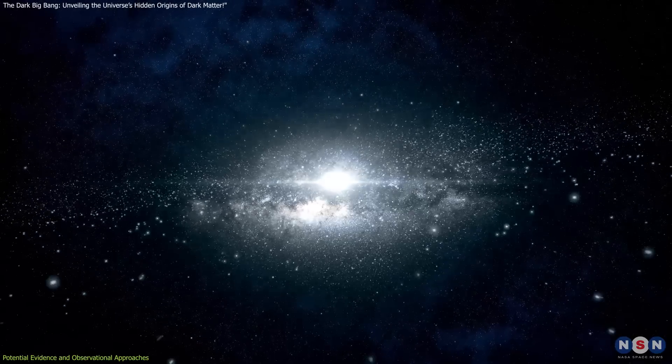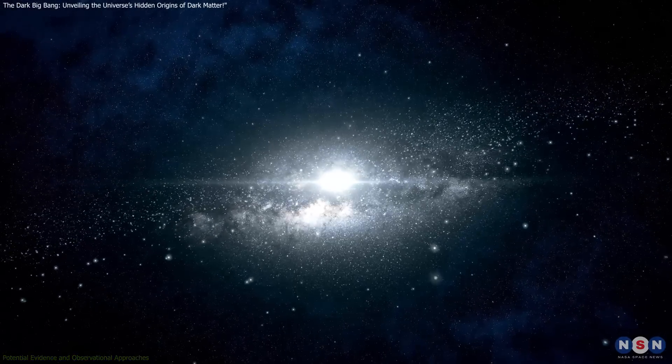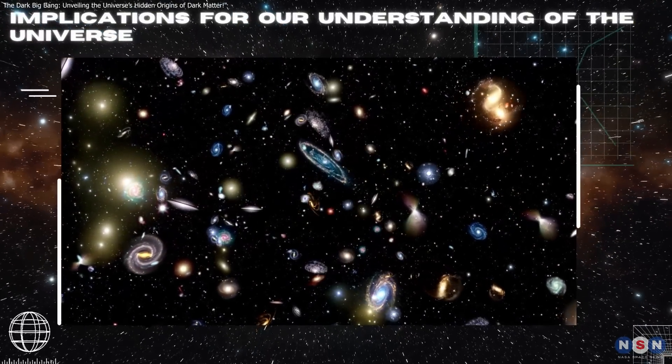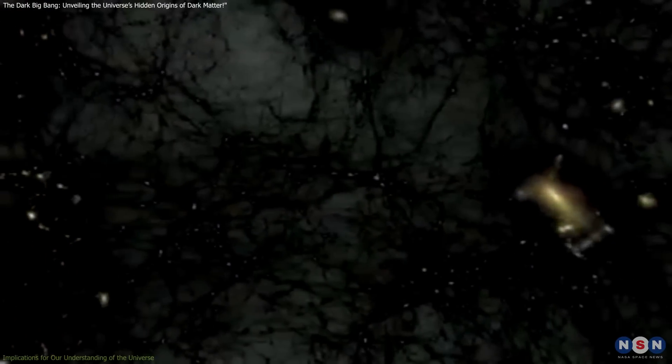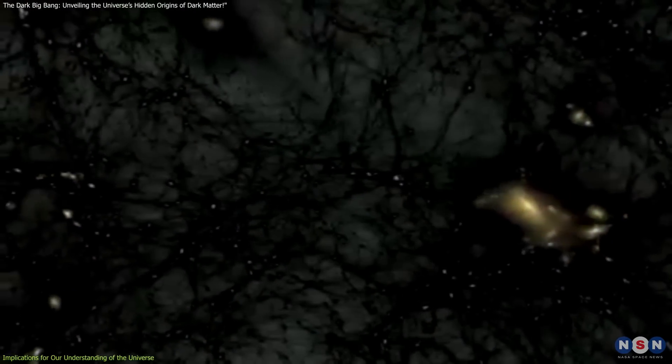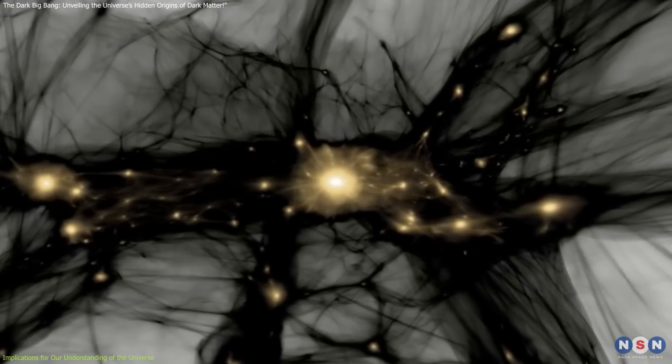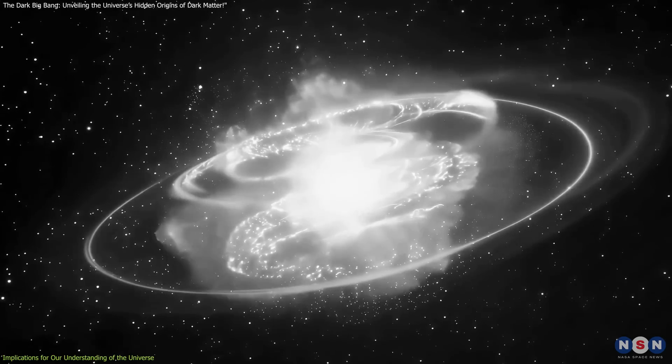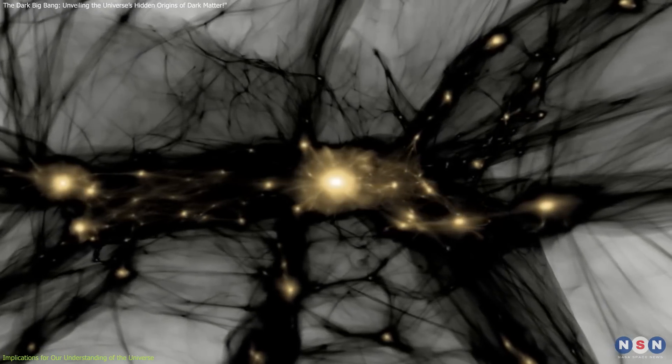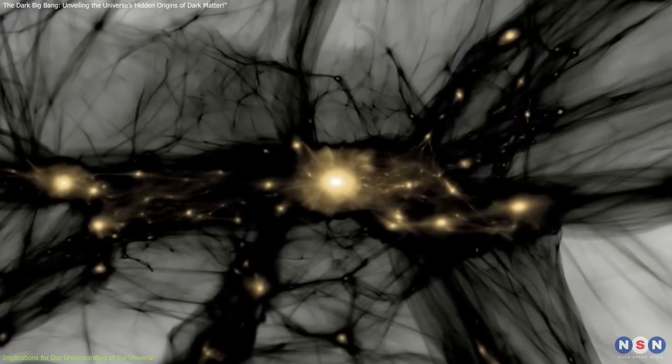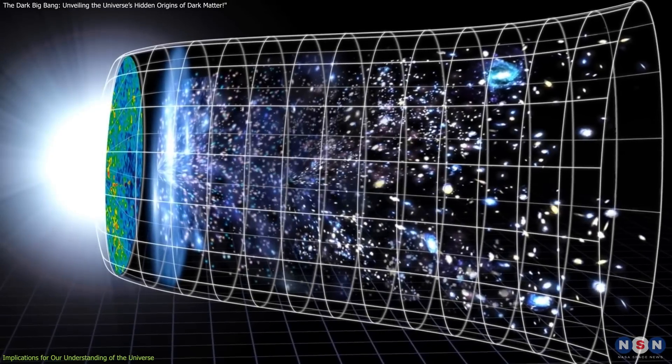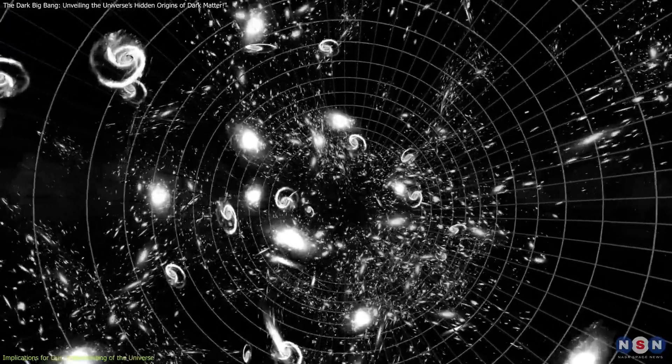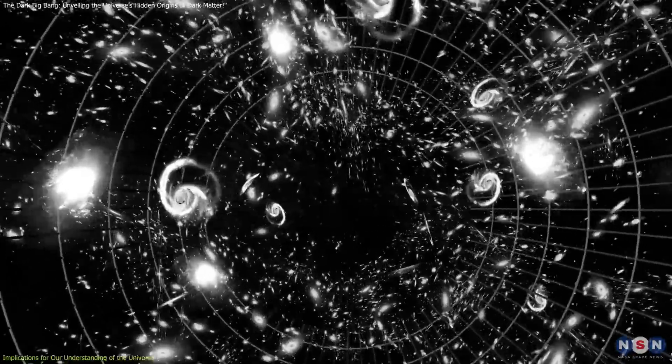But the implications of this hypothesis go far beyond detection. Dark matter is often described as the scaffolding of the universe, providing the gravitational pull that binds galaxies and clusters together. If it originated from a dark Big Bang, it might explain why dark matter halos, the invisible structures around galaxies, differ from predictions of cold dark matter CDM models, addressing anomalies in galaxy clustering and cosmic voids.